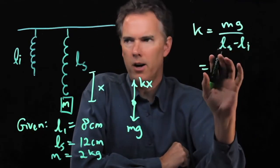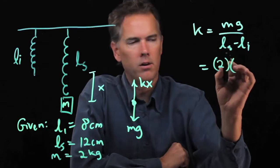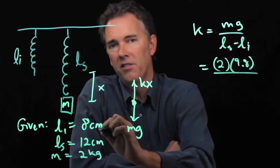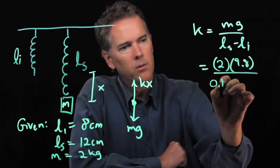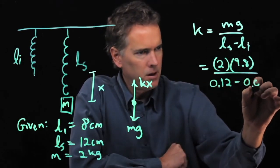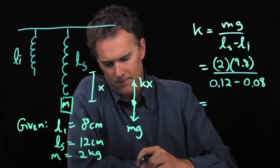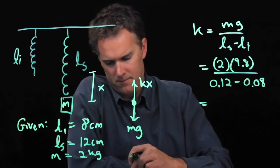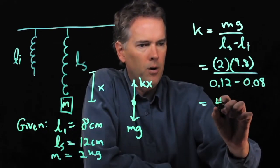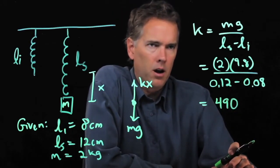So k was mg over ls minus li. Let's plug in some numbers. In SI units, we have 2 kilograms for the mass. g is 9.8 meters per second squared. ls is 12 centimeters, but we have to put that in SI units, which is meters, and so that becomes 0.12. li is 8 centimeters, so that becomes 0.08. And now, if you punch this into your calculator, what do you get? I get 490 for k.